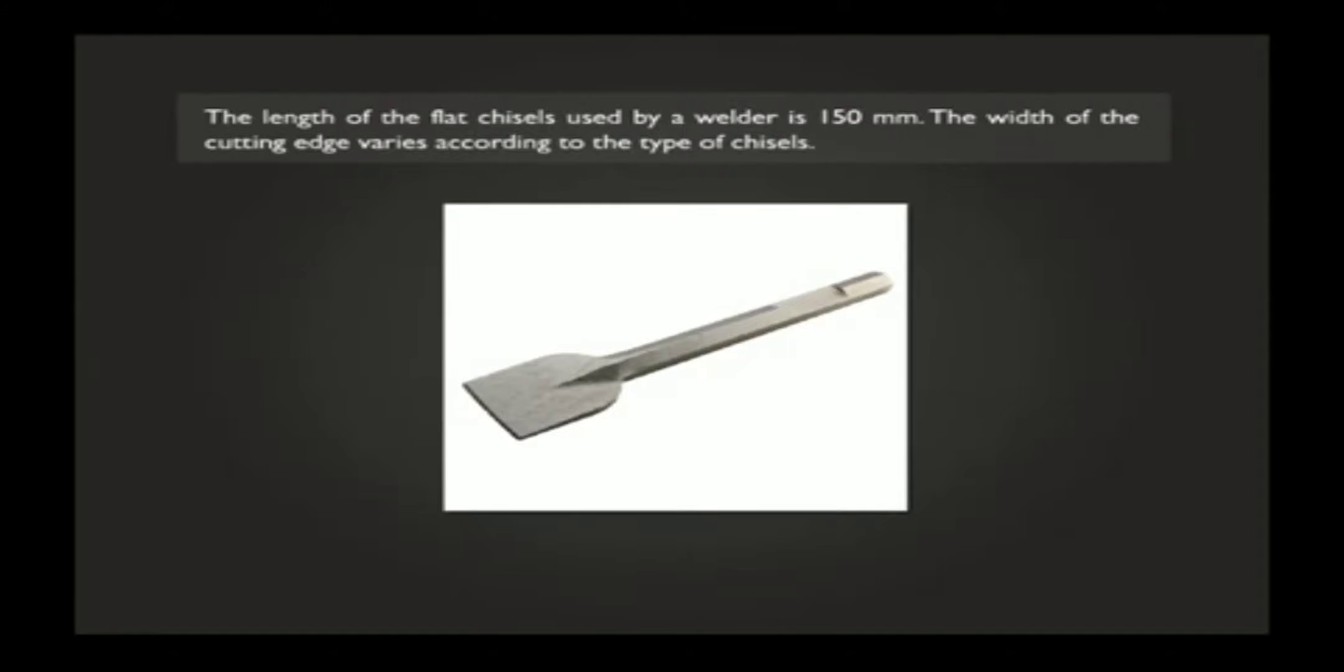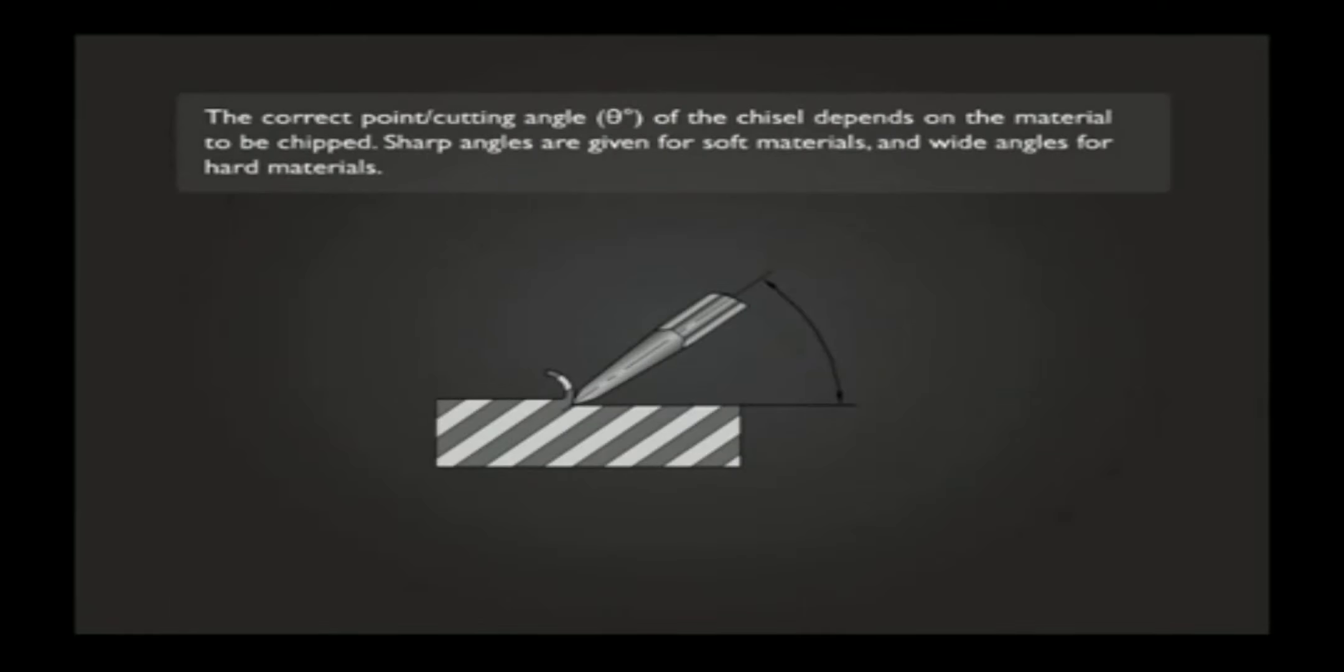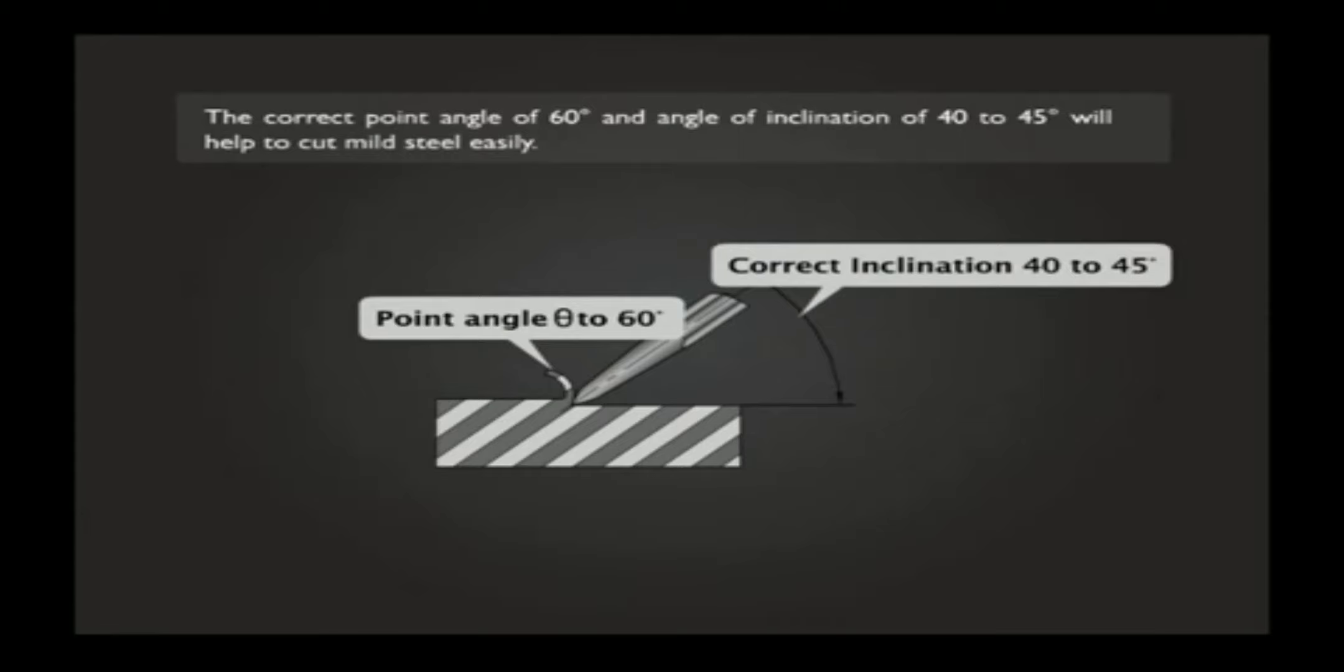The correct point or cutting angle theta of the chisel depends on the material to be chipped. Sharp angles are given for soft materials and wide angles for hard materials. The correct point angle of 60 degrees and angle of inclination of 40 to 45 degrees will help to cut mild steel easily.